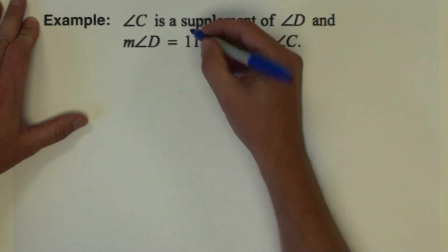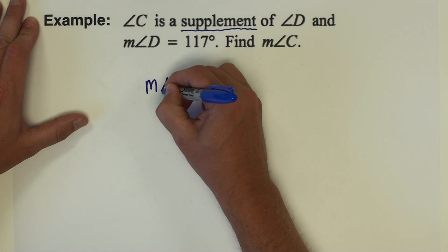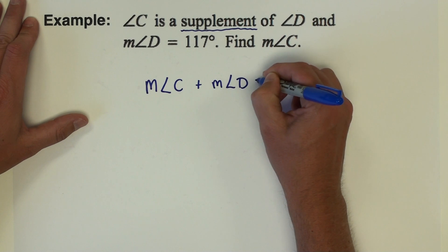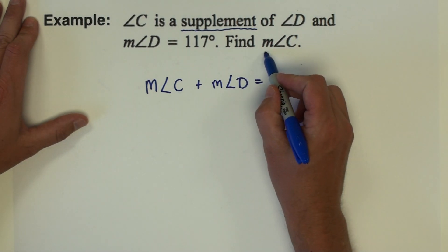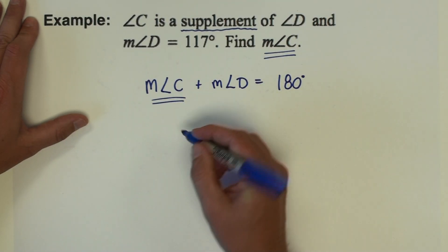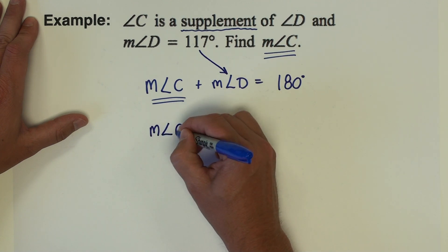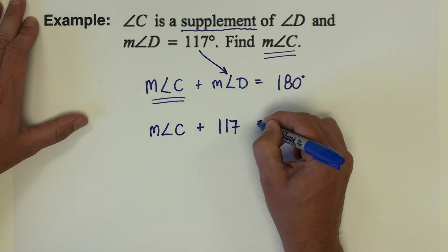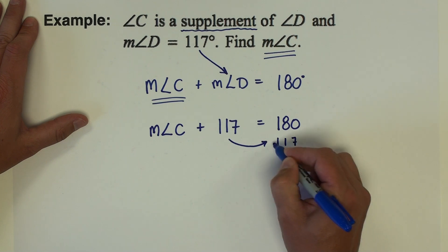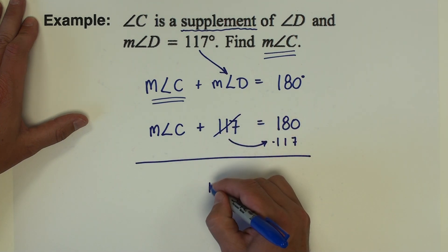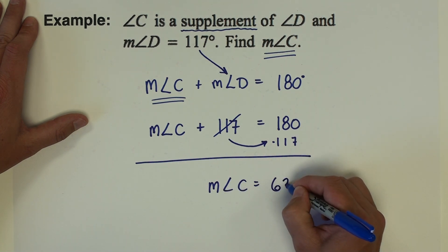Next example: angle C is a supplement of angle D, so the measure of angle C plus the measure of angle D equals 180 degrees. We're looking for the measure of angle C, and we know the measure of angle D is 117. So the measure of angle C plus 117 equals 180. Subtracting 117, the measure of angle C equals 180 minus 117, which is 63 degrees.